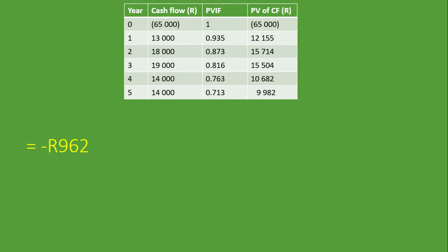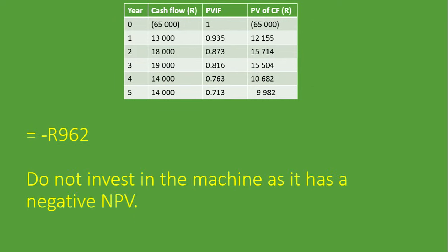Our verdict, given the NPV is minus 962 rand: do not invest in the machine as it has a negative NPV. If it were a positive NPV, we would say invest because you will have a positive return. We discounted all future cash flows to today's value, and that value is minus 962 rand — that's why we are not investing.